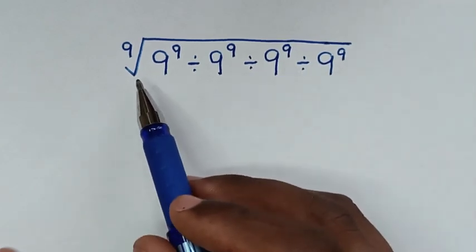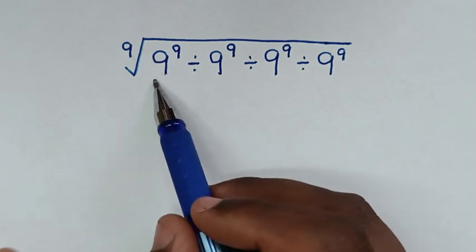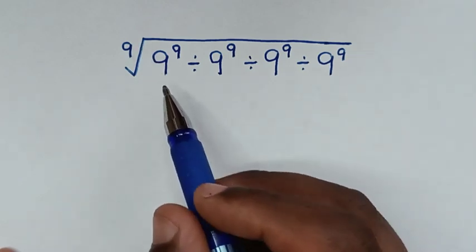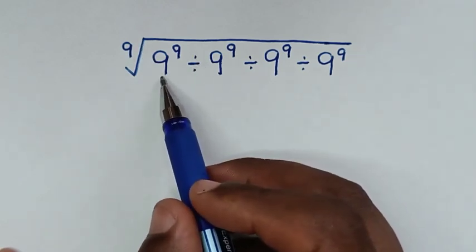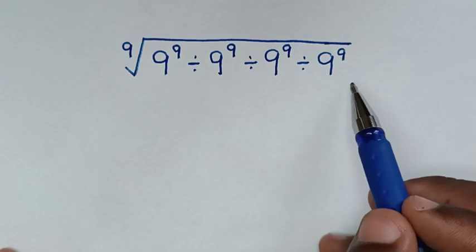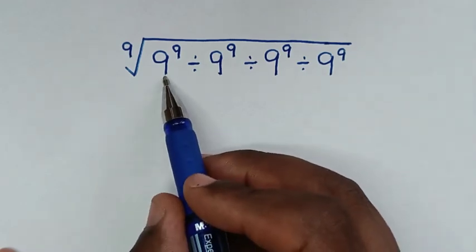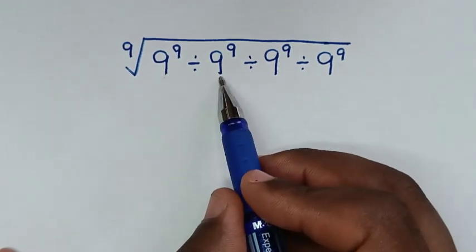Now from this expression under the 9th root, we start to deal with this operation from left to right. So we start to deal with this 9 power of 9 divided by 9 power of 9.